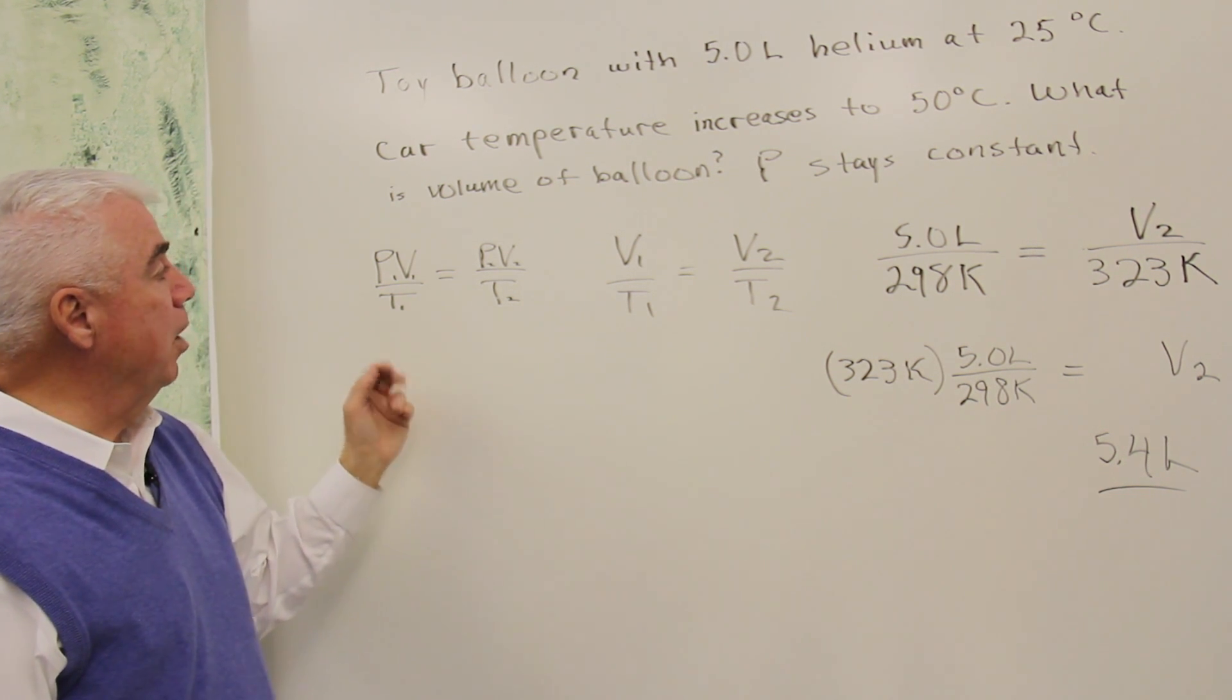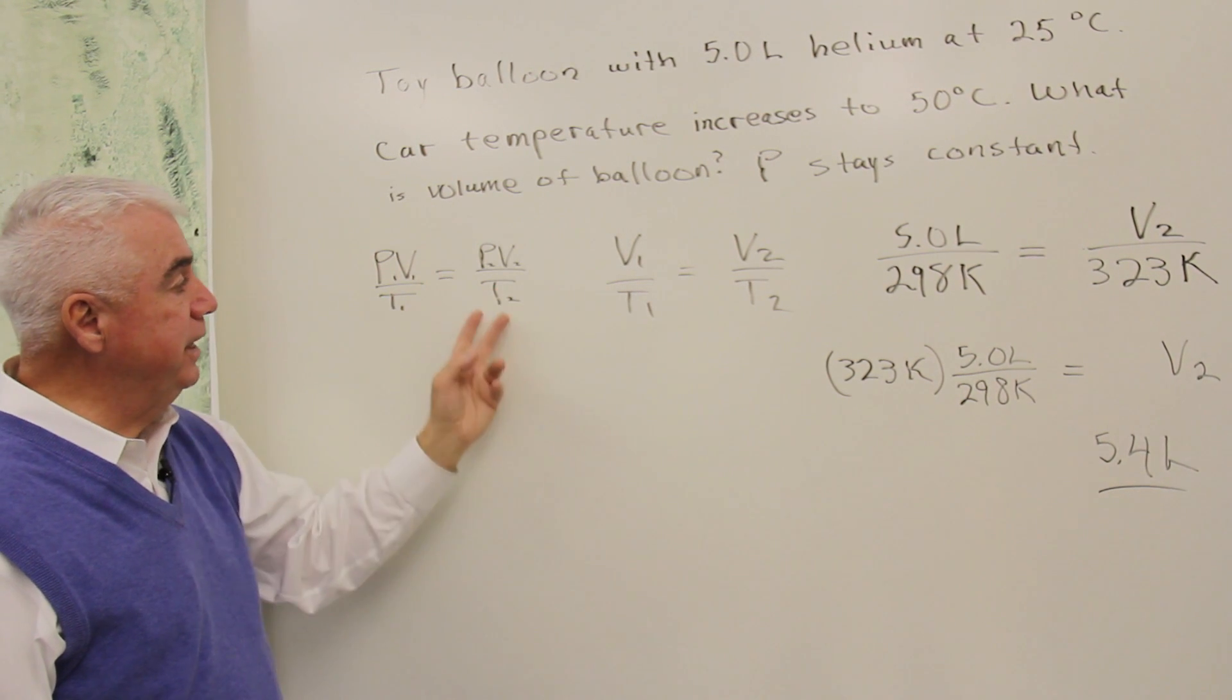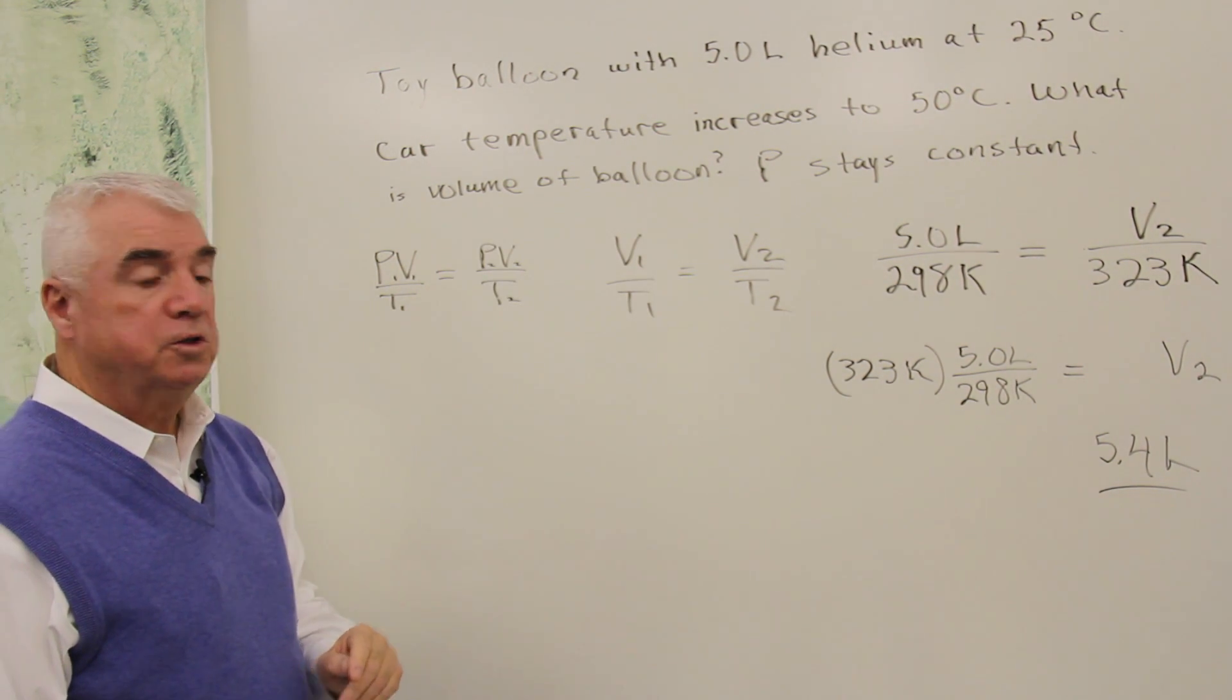It'll show us how to work the problem. Here's the combined gas law. PV over T equals PV over T. Pressure, we're told, stays constant.